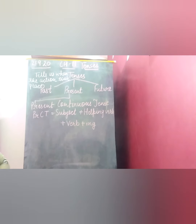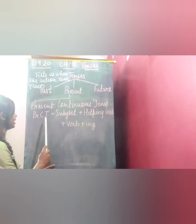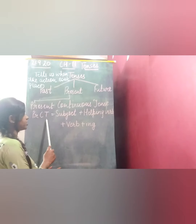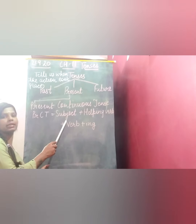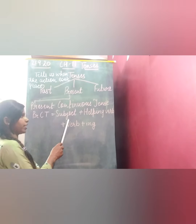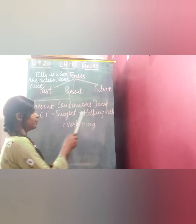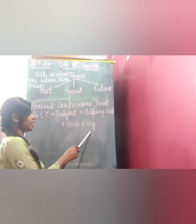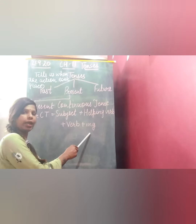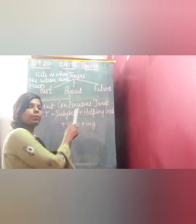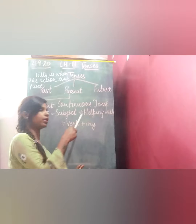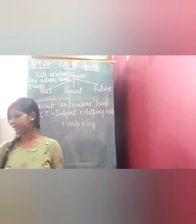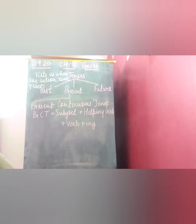The formula for present continuous tense is: Subject + Helping Verb + Verb + ing. So the structure is subject plus helping verb plus verb plus ing. Now, what are your helping verbs?